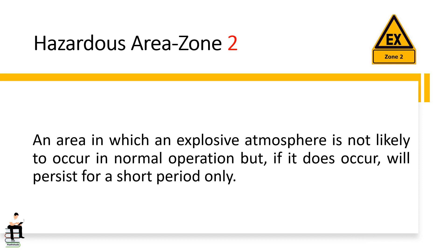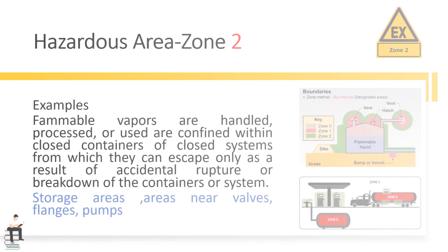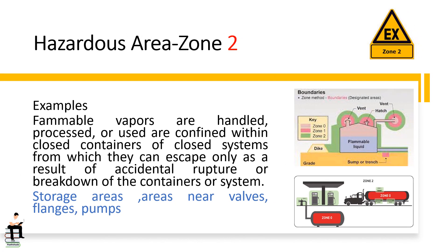Zone 2 is an area in which an explosive atmosphere is not likely to occur in normal operation, but if it does occur, will persist for only a short period. Examples include areas where flammable vapors are handled, processed, or used and confined within closed containers or closed systems from which they can escape only as a result of accidental rupture or breakdown. Other examples include storage areas and areas near valves, flanges, and pumps.